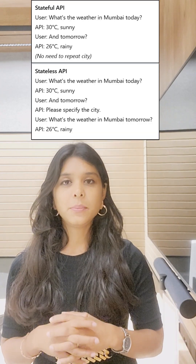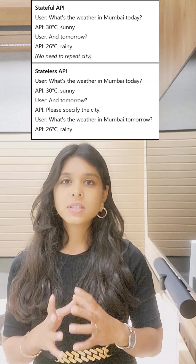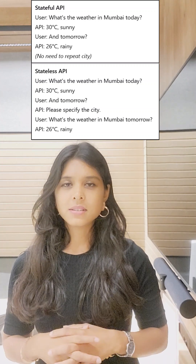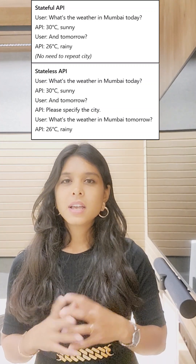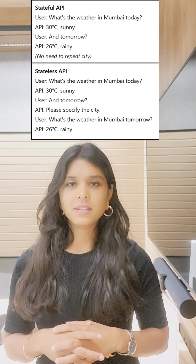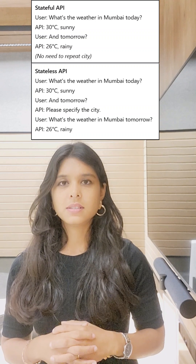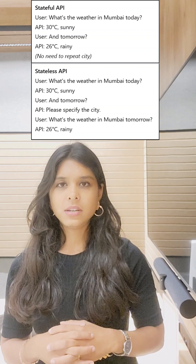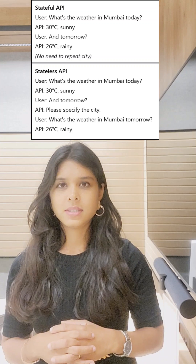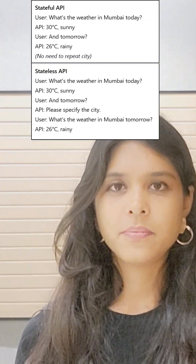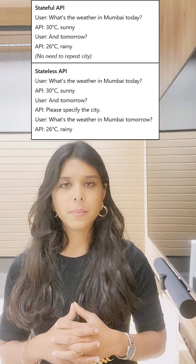For example, if you ask a stateful API how's the weather today in Mumbai, it might answer: it's 30 degrees Celsius and it is sunny. Then in a follow-up prompt, if you ask how about tomorrow, it might correctly answer: tomorrow it might rain with 26 degrees Celsius.